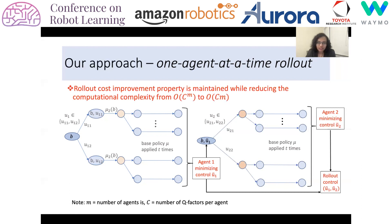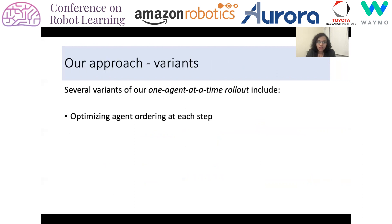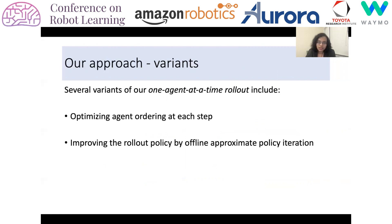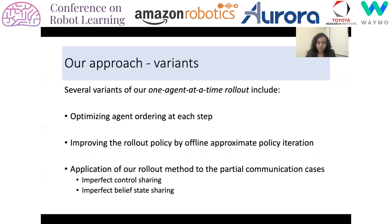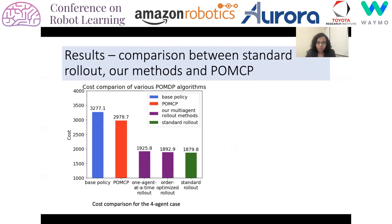We have variants to this method. Firstly, we optimize the agent ordering at each step of the rollout. Secondly, we improve the rollout policy by using an offline policy iteration method. We also apply our method to imperfect communication cases where agents do not share their belief and controls at each step. Our paper includes comparisons between our methods and the standard rollout method and other state-of-the-art methods such as POMCP.